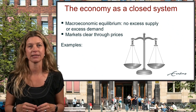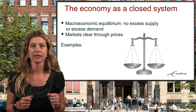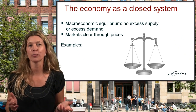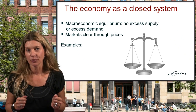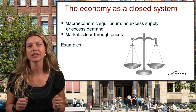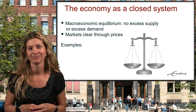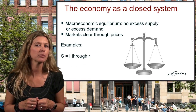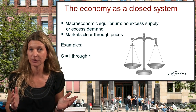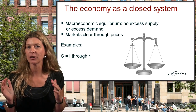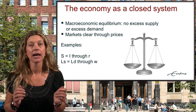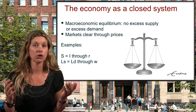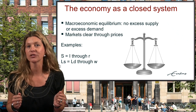Markets clear through prices. The general price level, the wage level, interest rates, the currency exchange rate — these are all prices. So in neoclassical economics, prices always adjust to make markets clear. For example, in the financial market, interest rates will be at such a level to make the amount of investment equal to the amount of money that households save. And in the labor market, the wage rate will adjust in such a way that there will be no unemployment or vacancies left unfilled.